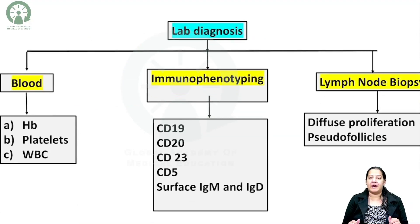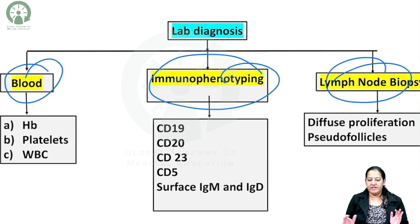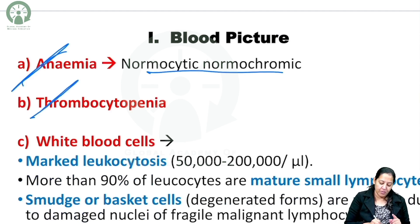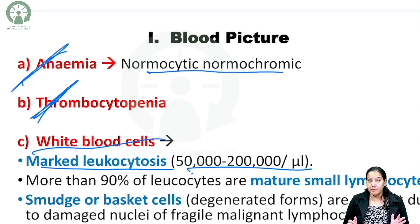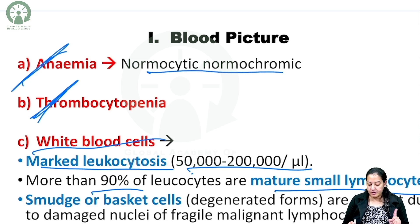For lab diagnosis, we divide it into three categories: blood picture, immunophenotyping, and lymph node biopsy. In the blood picture, there is normocytic normochromic anemia, thrombocytopenia with reduced platelet count, and marked leukocytosis — the WBC count is increased ranging from 50,000 to 2 lakh. Normal WBC count is 4,000 to 11,000, but here it is increased abruptly. 90% of the WBCs are small mature lymphocytes, and we do not find blasts here.